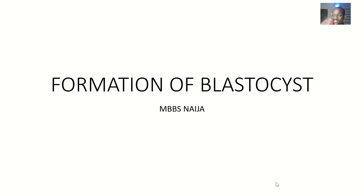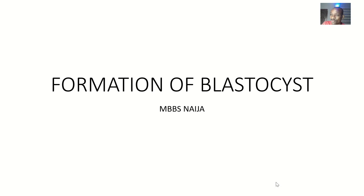After fertilization, after one day, the zygote starts dividing into the two-cell stage, four-cell stage — which is the blastula. Then the four-cell divides into the eight-cell stage. The 16-cell stage is what is known as the morula. So morula could be the eight-cell stage or 16-cell stage. Then from there we have the blastocyst.